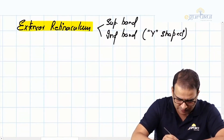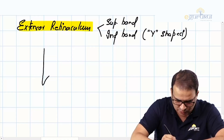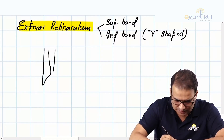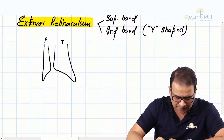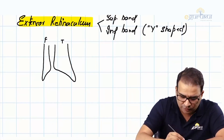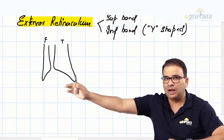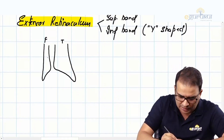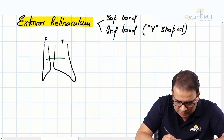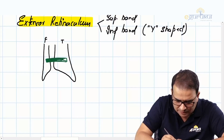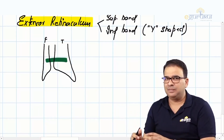To understand this, let me draw a small diagram. Here is the fibula on the lateral side and the tibia on the medial side. The superior band of the extensor retinaculum extends from the anterior border of the fibula to the anterior border of the tibia in the lower part.